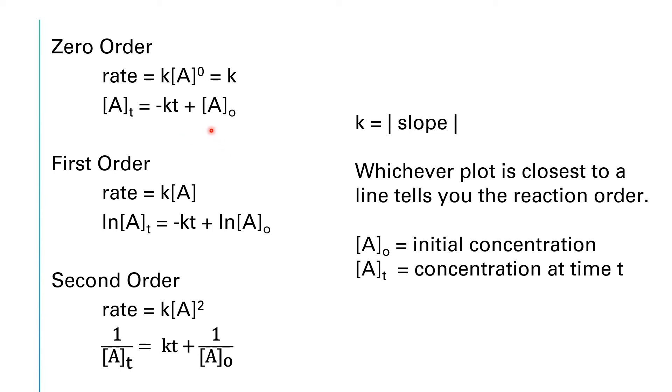If it's a first order reaction, then we would write the rate law as the rate is equal to k times the concentration of [A] raised to the first power, but we usually don't write exponents of one. If you do some calculus here and integrate with respect to t, you end up with this next equation. The natural log of [A]_t is equal to -kt plus the natural log of [A]_0. And once again, if you're given all but one of these values, you should be able to solve the equation for the missing value.